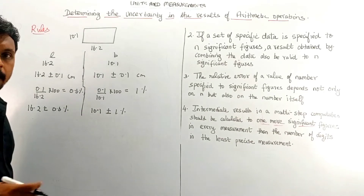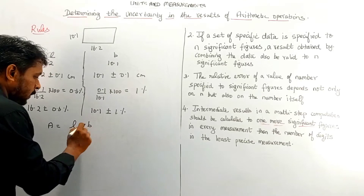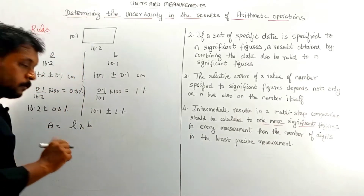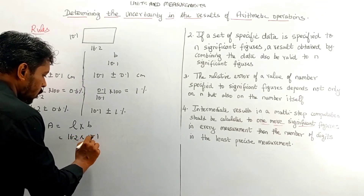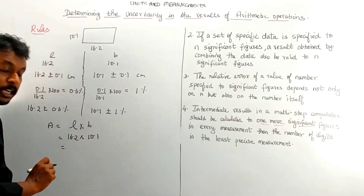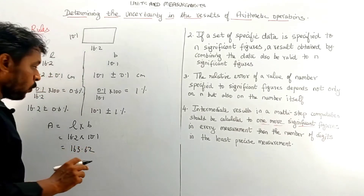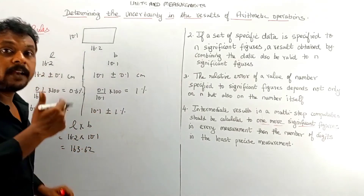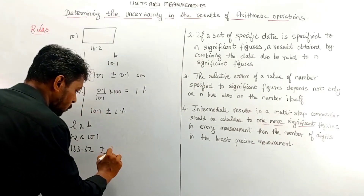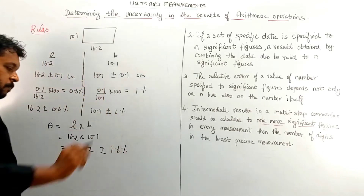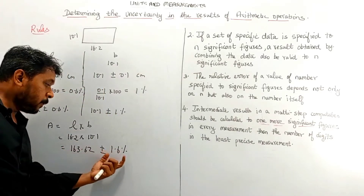So what will be the value of area? Area is equal to length into breadth for the rectangle. Length 16.2 into 10.1 gives 163.62. Now what about the percentage error for the area? We have to add the percentage errors: 0.6 plus 1 equals 1.6 percent. So the area is 163.62 ± 1.6 percent.